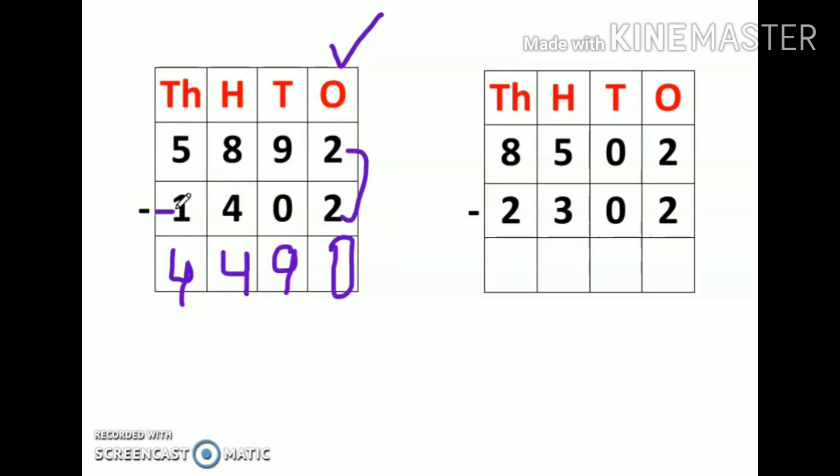Whenever we have to subtract a number, make sure to start from the number which is smaller and you have to count till the number which is on the top. For example, I will start from one and I will count till five: one, two, three, four, and five. Five fingers are up, so my answer is four.